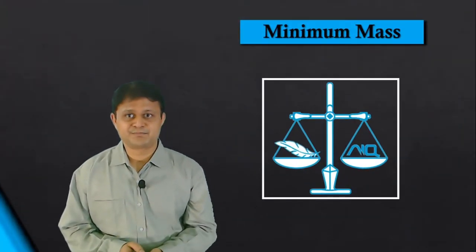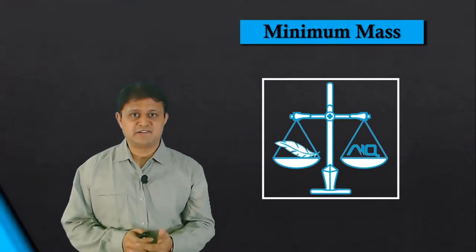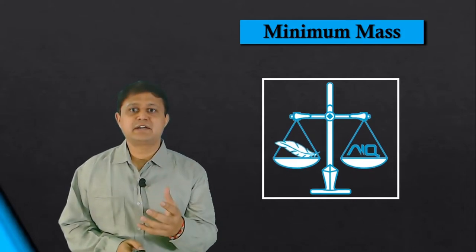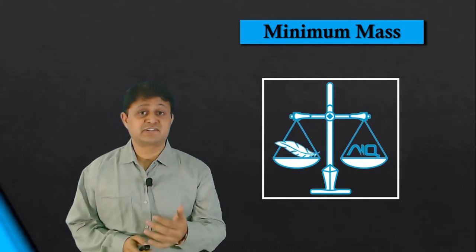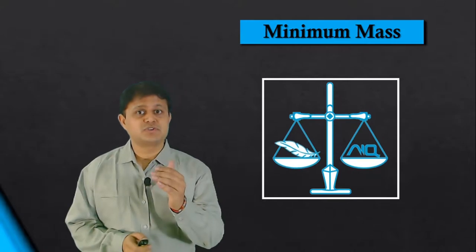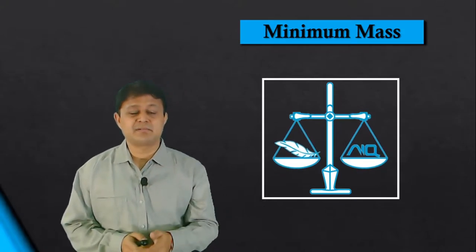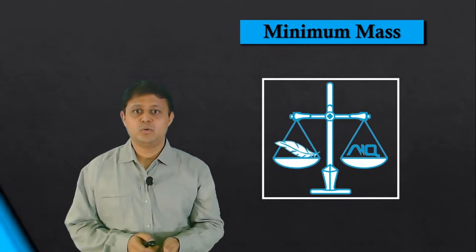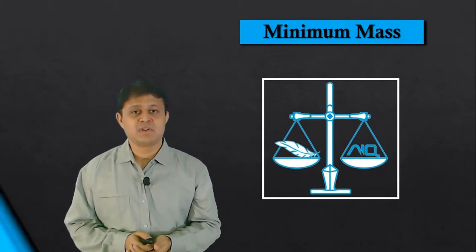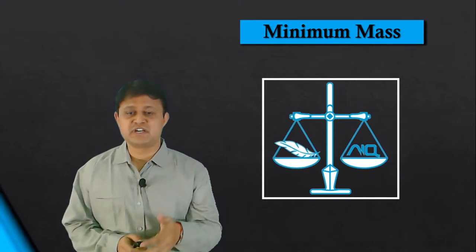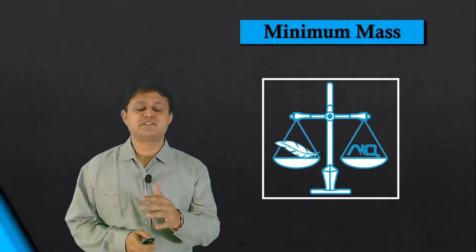The second is minimum mass. Because of the minimum mass, overall weight of the reciprocating masses gets decreased, and due to this, balancing procedure becomes quite easy. So with minimum mass, piston engine can be balanced efficiently and overall efficiency of the engine gets increased.